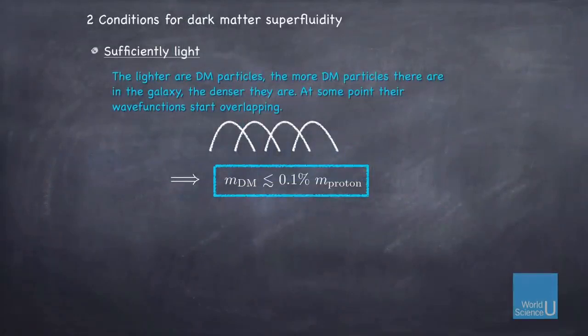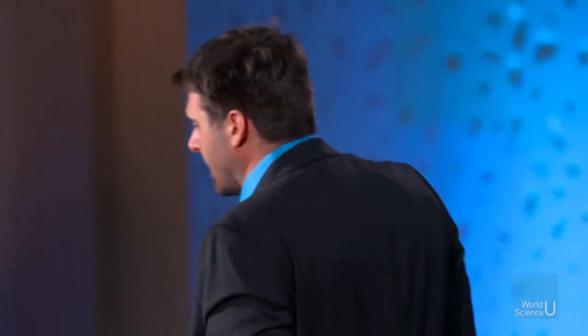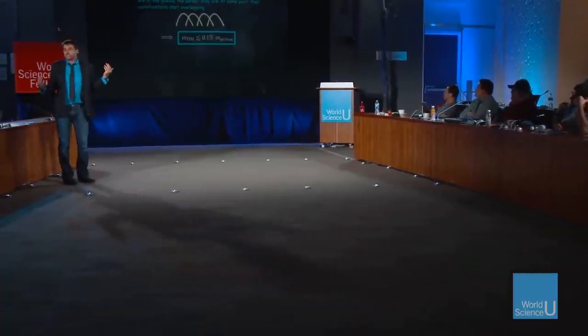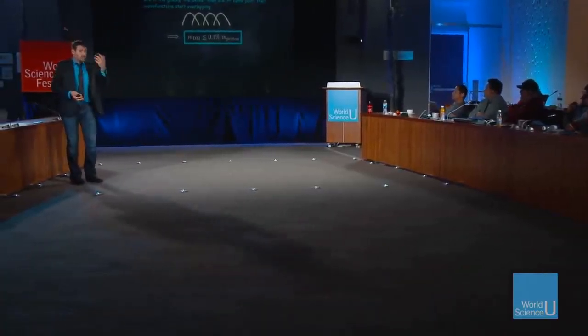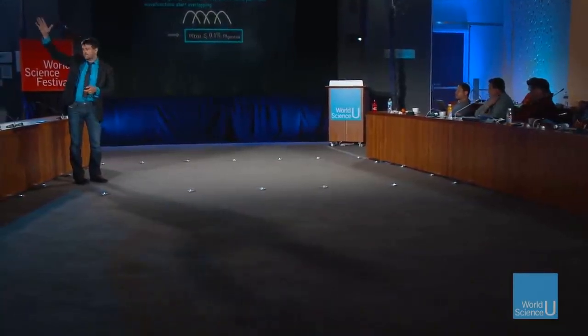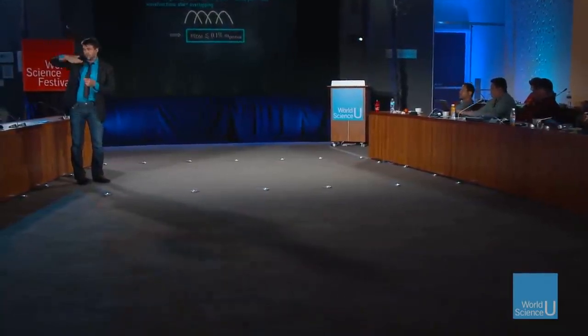We know the total mass. So if you want to have a lot of dark matter particles, it means each particle has to be light. When you work out the numbers, it turns out that the mass of the dark matter particle has to be 0.1% the mass of the proton. Much lighter than WIMPs — weakly interacting massive particles — but people talk about other types of dark matter particles in that mass range. They just happen to be light particles.